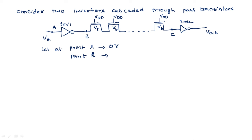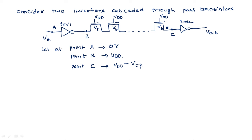If the input at point A is 0 volts, then at point B the output is VDD (logic 1, approximately 5 volts). After passing through the pass transistors, the voltage at point C — which is the input to inverter 2 — is VDD degraded by the threshold voltages of all pass transistors: VDD minus (VT1 + VT2 + VT3 + ...), which we write as VDD minus VTP. The voltages at B and C are not equal due to the pass transistors.